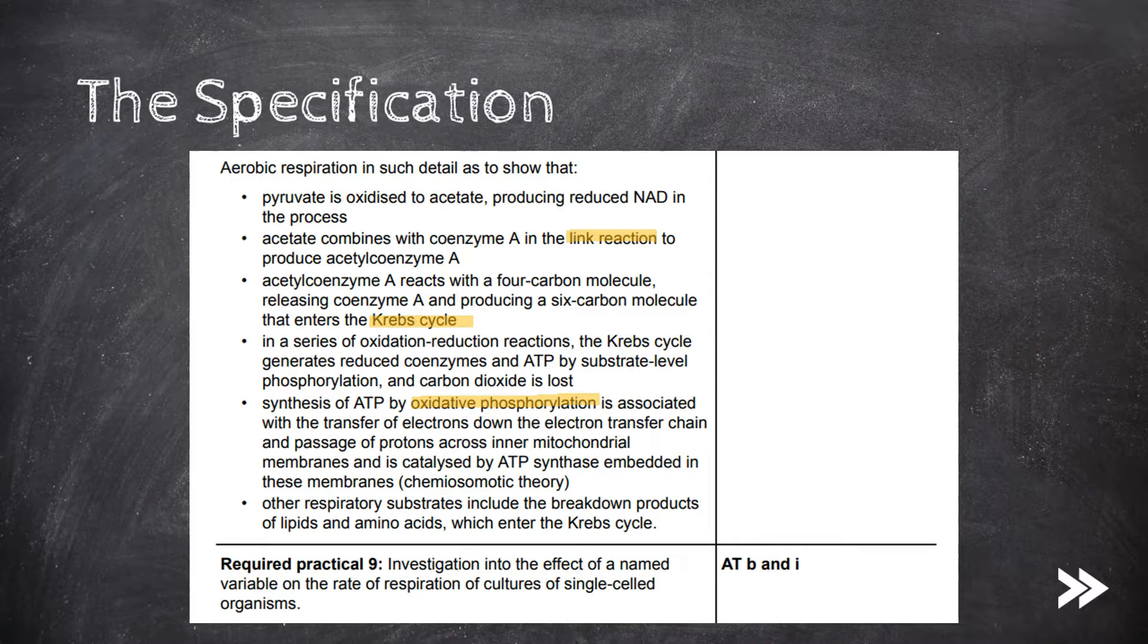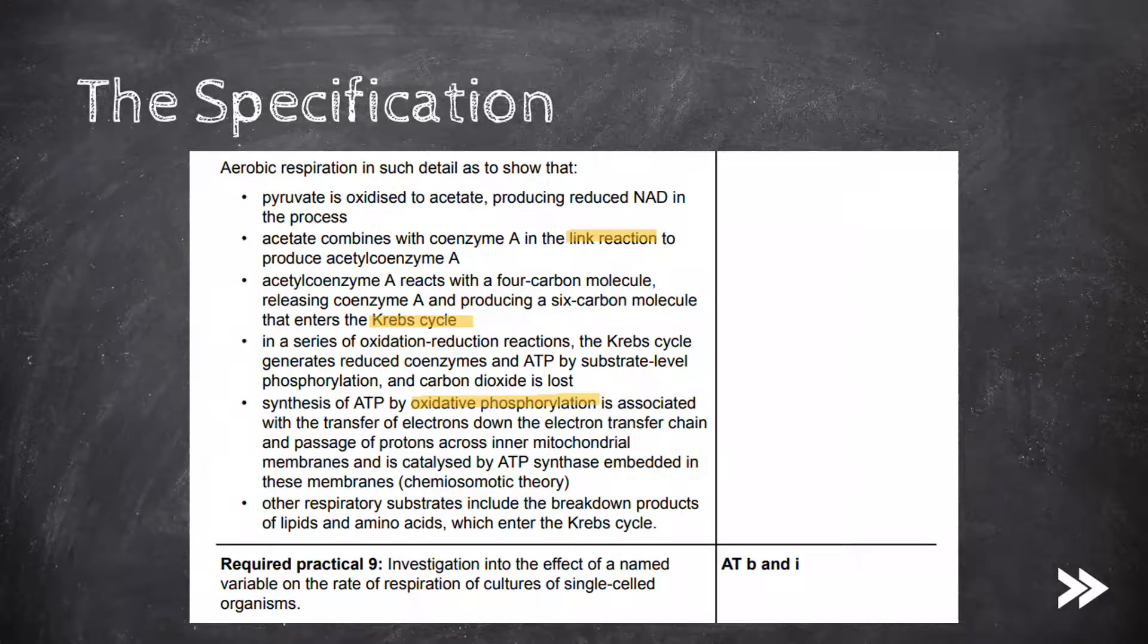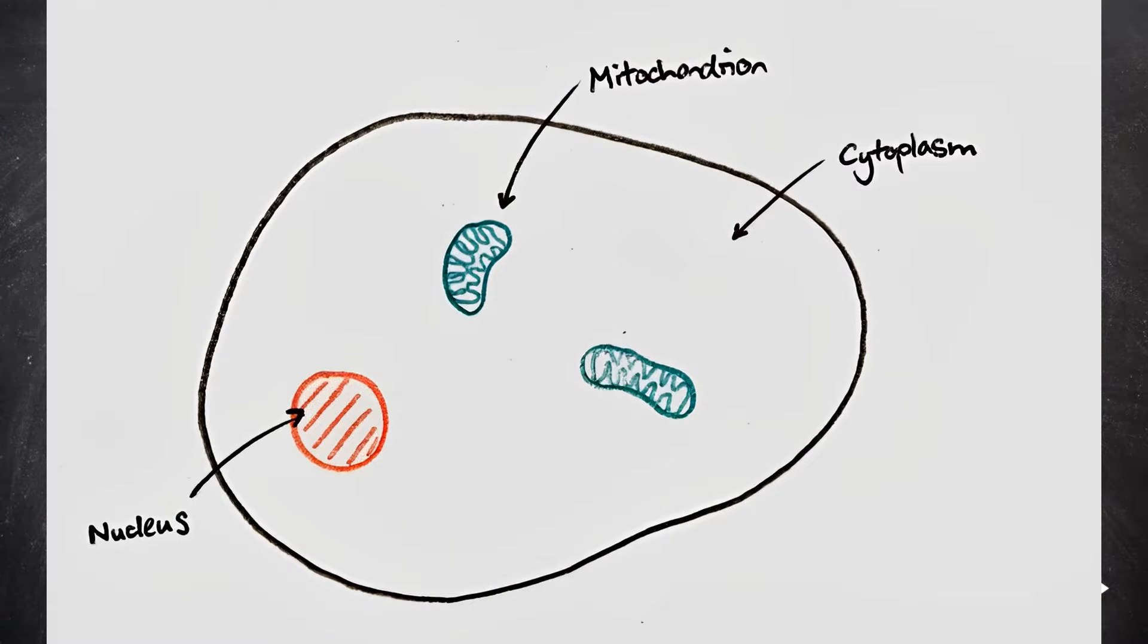Before we start, it's worth mentioning that it is very useful to learn the diagrams which I'll be showing off by heart, whilst also taking note of the number of carbon atoms present in each compound, and I will always show this in brackets after the name of each compound on each diagram. So, as just mentioned, the first stage in both aerobic and anaerobic respiration is the same. This stage is known as glycolysis, and occurs in the cytoplasm of cells.